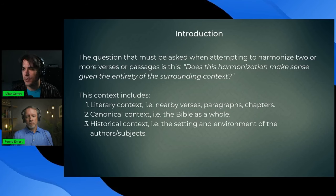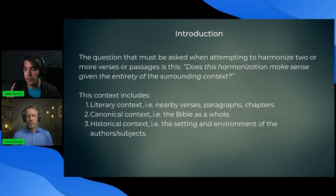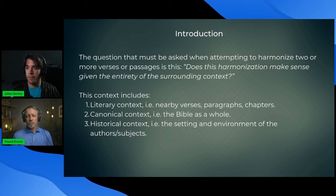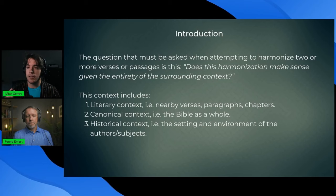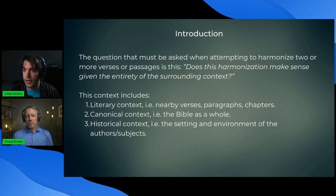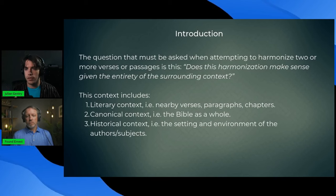This question that must be asked when attempting to harmonize two or more verses or passages is this: Does this harmonization make sense given the entirety of the surrounding context? And that includes, but is not necessarily limited to, literary context—nearby verses and chapters and paragraphs and whatnot. Canonical context, meaning you look at the Bible as a whole, not isolated books. And then historical context is the setting and the environment of the authors. And then there you can include extra biblical sources and history and all kinds of stuff like that.